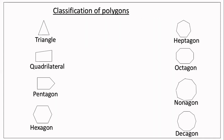Next is the classification of polygons according to their angles and sides. Triangle — tri means three, so three vertices and three angles are there in a triangle. Next is quadrilateral — quad means four, lateral means sides, so four-sided figures with four angles are called quadrilaterals.